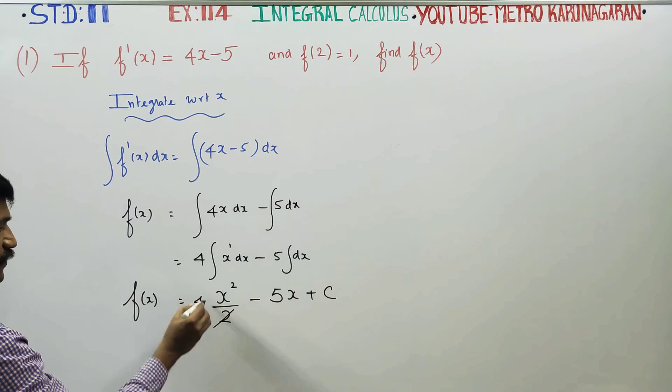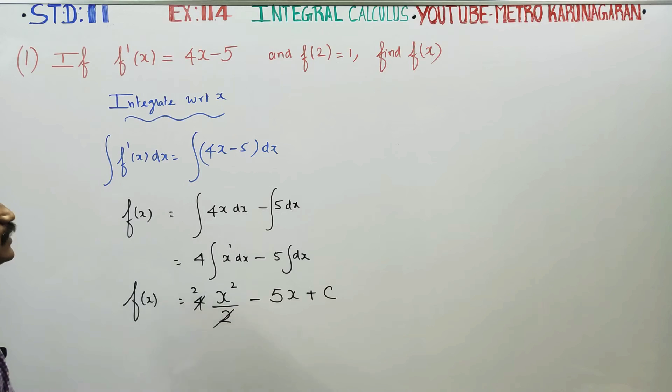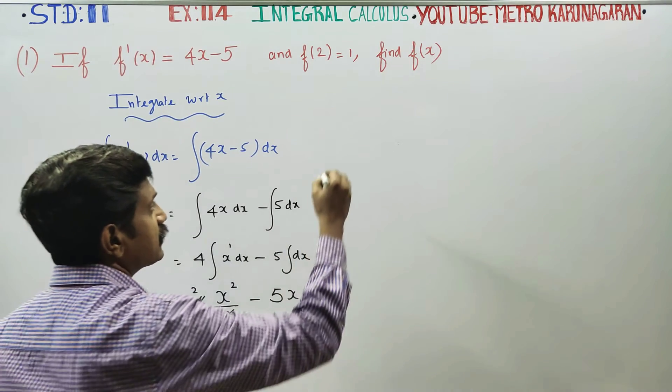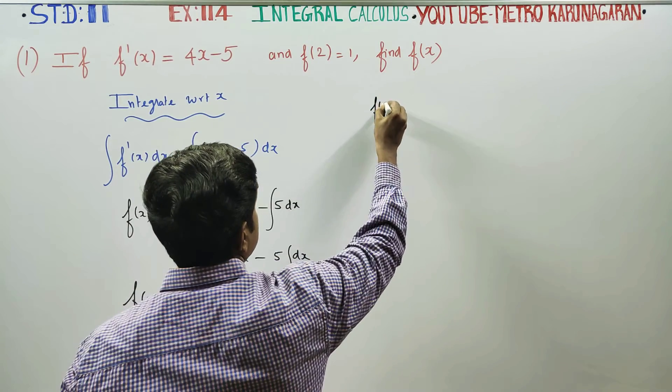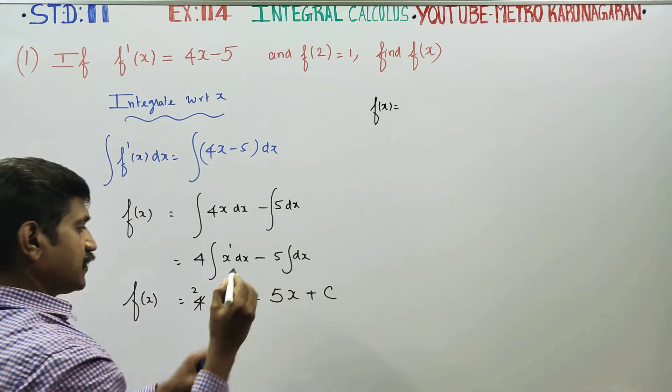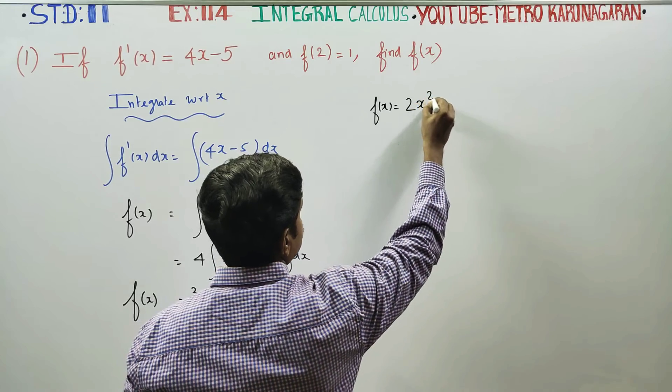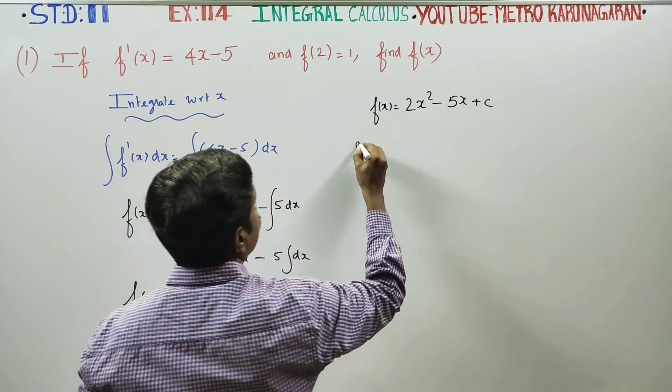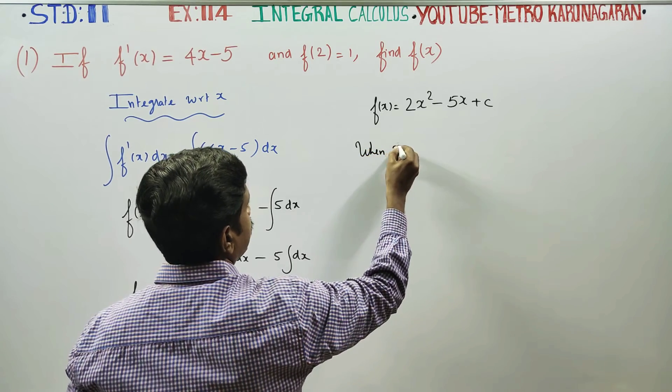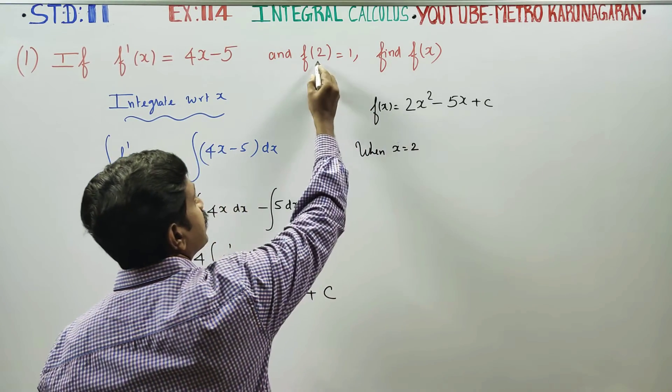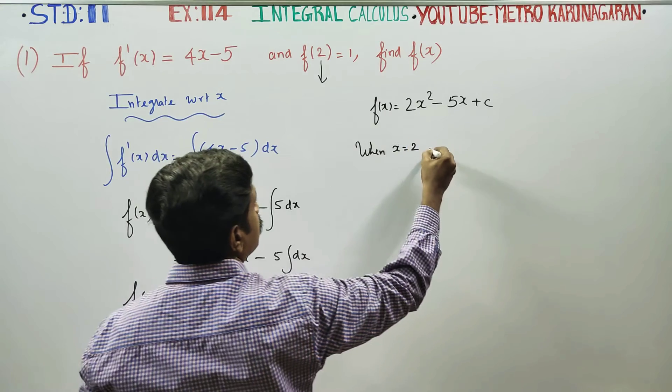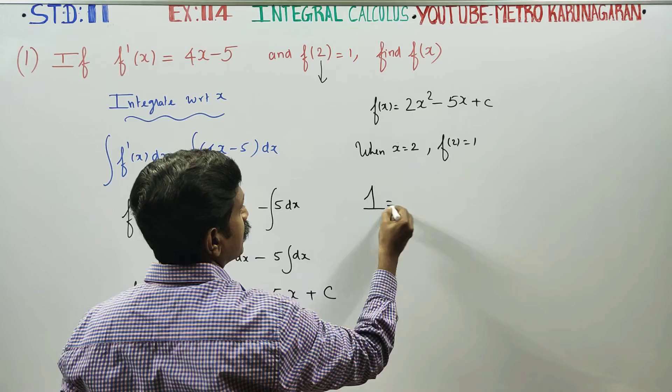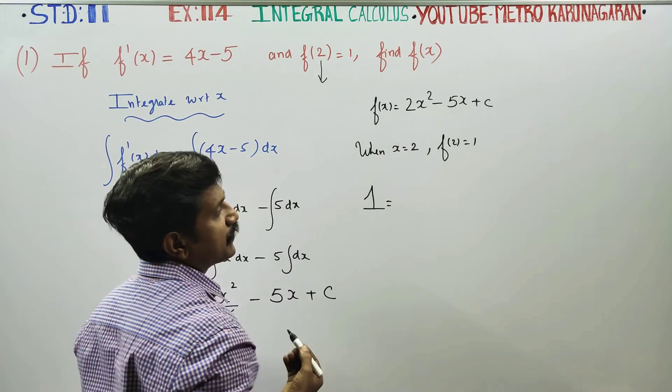This is my f(x). Now, f(2) is equal to 1. f(x) is equal to 2x² minus 5x plus C. When x is equal to 2, my f(2) is 1. Substitute x = 2.